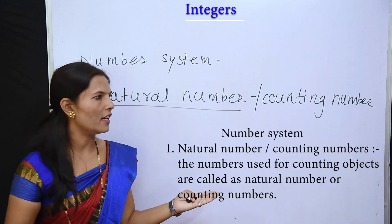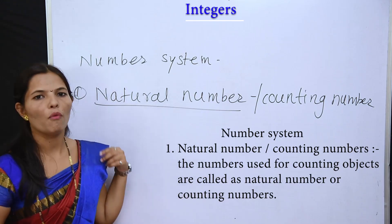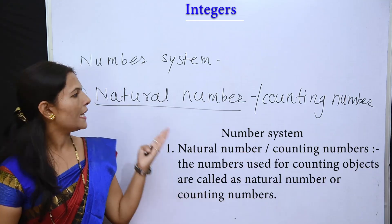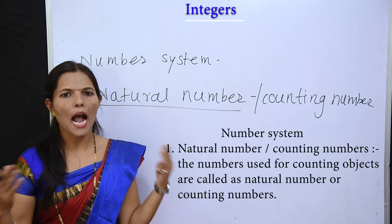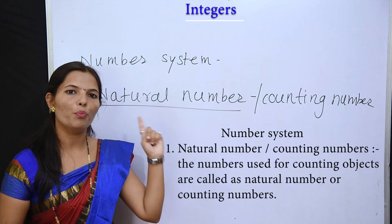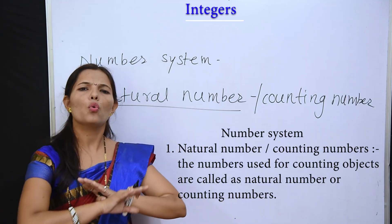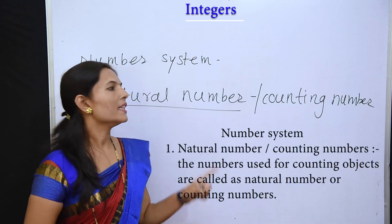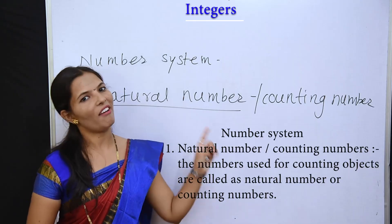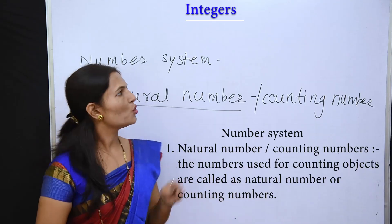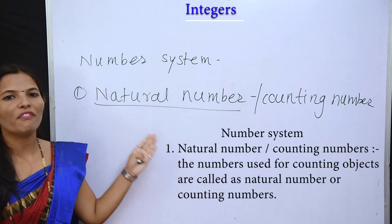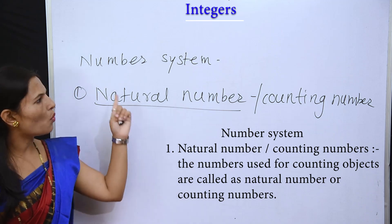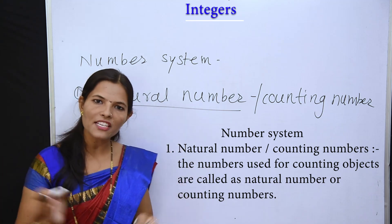How many chocolates? Then how will you start? Starting from 1, 2, 3 and 4. In this way you count. You call these counting numbers. The numbers which you use for counting chocolates, or for counting any objects, those are called counting numbers or natural numbers. So students, here is the definition of natural number or counting number: the numbers which are used for counting objects are called as natural numbers.